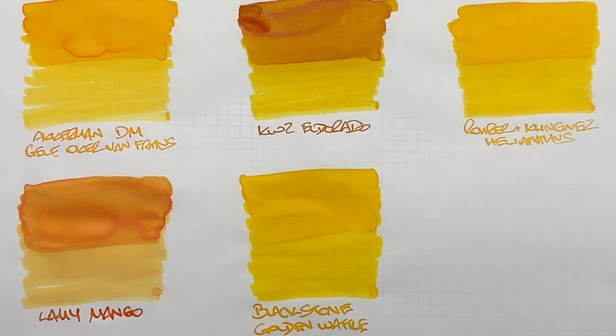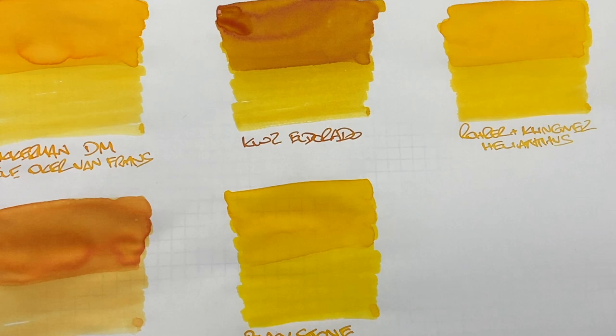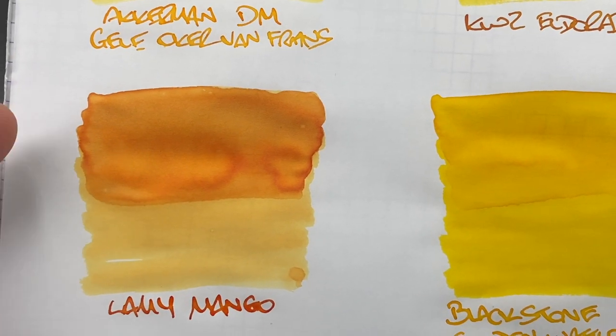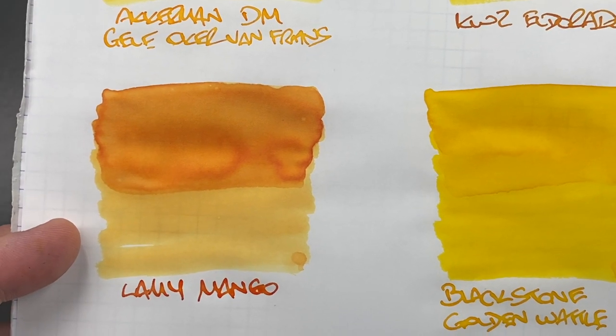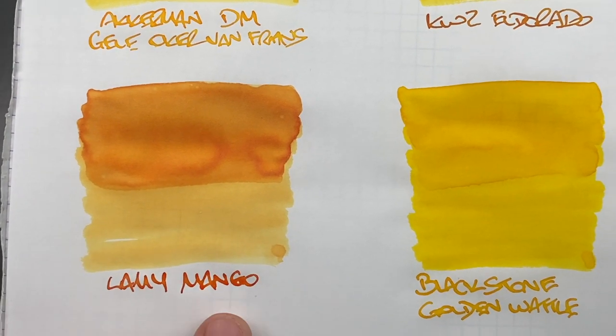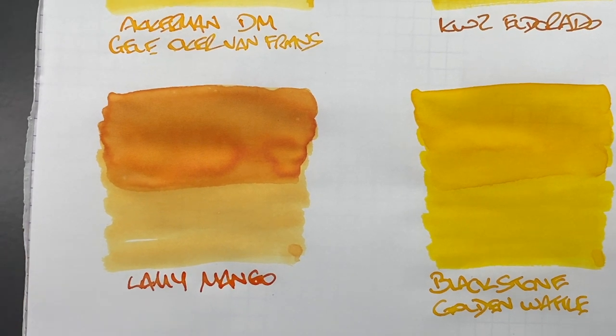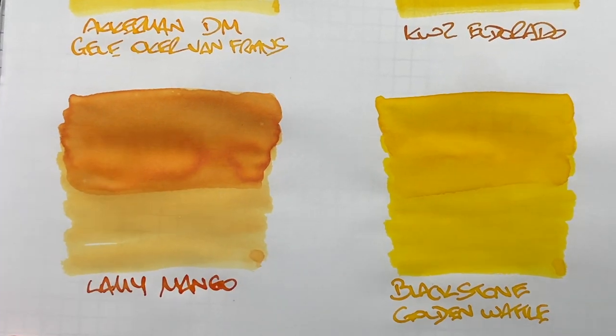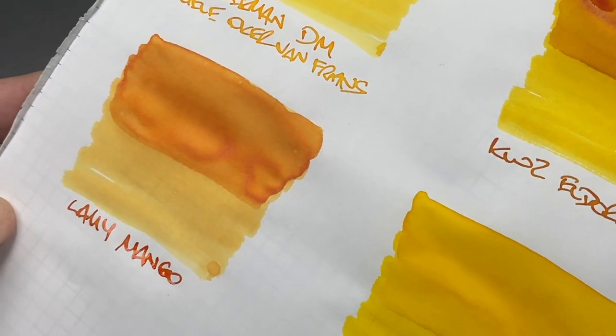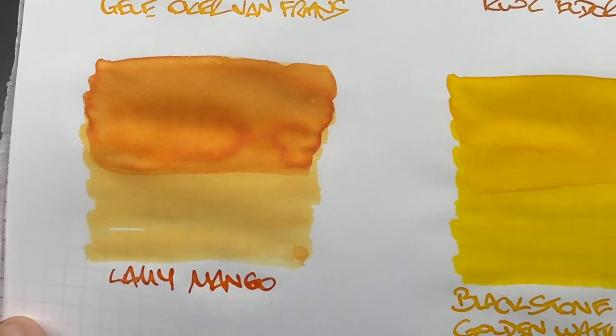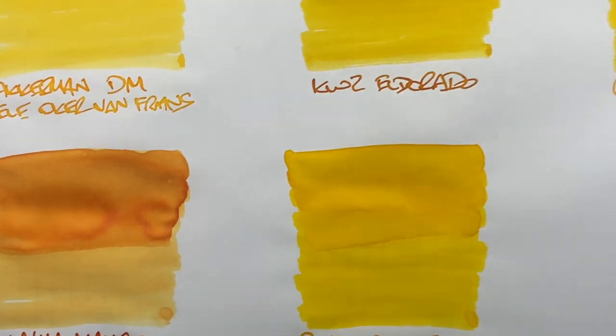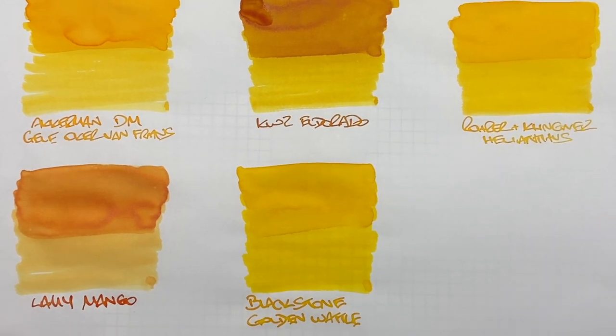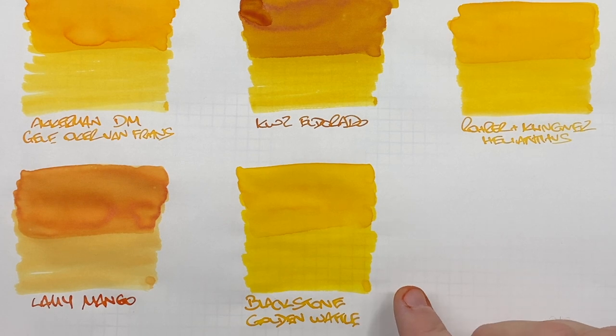The next thing here is Lamy Mango and that is a little bit similar to KWZ Eldorado. You can definitely see the difference between a wet or broad or dry or narrow writing nib. The writing sample is still wet actually on this one. Can you see any shading? You can in the pooled area. And again you're not going to see any sheen there. But it's a very nice mango color. For me that is an ink that I've been using a lot lately.